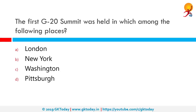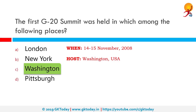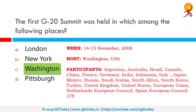The first G20 summit was held in which place? The first G20 summit happened between 14 and 15 November 2008 in Washington, USA. It achieved general agreement among the G20 on how to cooperate to strengthen economic growth, deal with the 2008 financial crisis, and lay the foundation for reform to avoid similar crises in the future. The summit resulted from an initiative by French and European President Nicolas Sarkozy and British Prime Minister Gordon Brown. There are 19 participants to this summit.